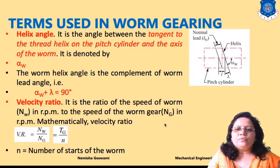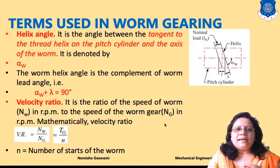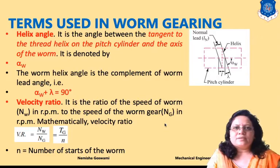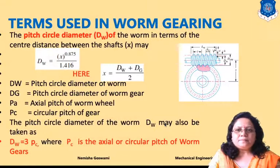The velocity ratio is the RPM of the worm divided by the RPM of the gear, and it is also given by Tg / n, where Tg is the number of teeth on the gear and n is the number of starts. Using this formula, you can find out the velocity ratio.